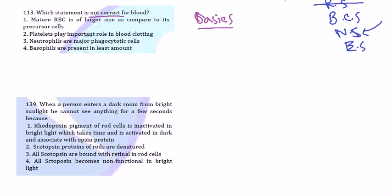They want to find which is not correct, because three of them will be correct, one will be not correct. Mature RBC is of larger size as compared to its precursor cell, and I know that from the precursor cell, mature RBC is definitely not larger. Precursor is larger than RBC. So the statement here, the first statement is wrong, that RBC mature RBC is larger than precursor cell, because the precursor cell is always larger than mature RBC. So it's wrong. Obviously we can take on it because the first option is not the correct statement.